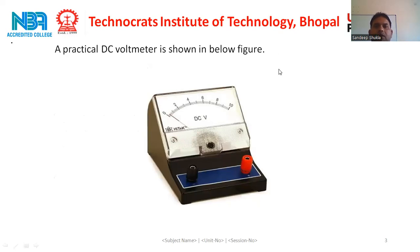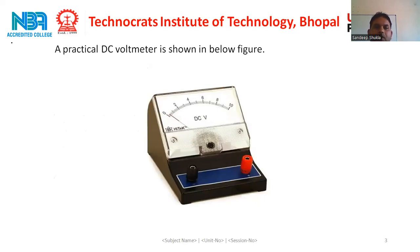Here is the practical DC voltmeter. In this DC voltmeter, there are two knobs: the black knob used for the positive potential and the red knob used for the negative potential. We can measure the DC voltage from 0 to 10 volt range.